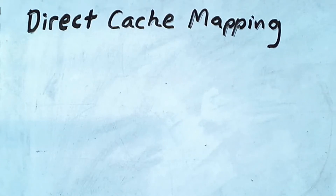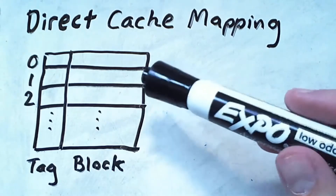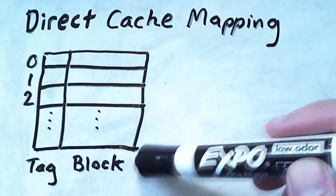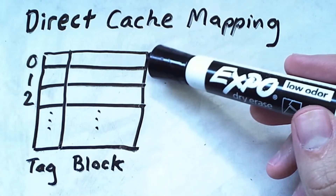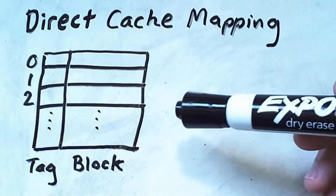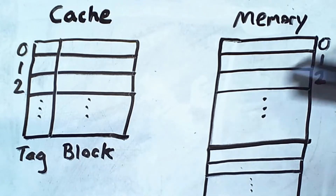The size of the cache is always significantly smaller than the size of main memory, so a way is needed to decide what parts of memory go in the cache and where they go. This video focuses on a simple cache mapping scheme known as direct mapping. Recall that the cache consists of tagged lines. A portion of each line is a tag, and the remaining portion of each line is a block — the actual storage portion of the line. In this diagram, we'll list one line in memory for each block, the same way we are depicting things in the cache.